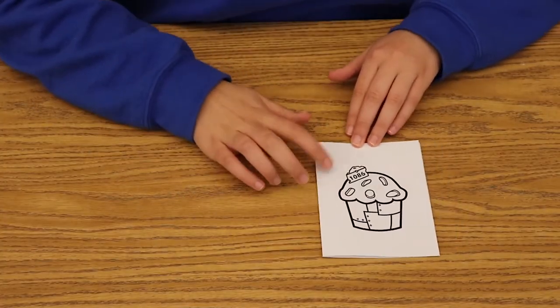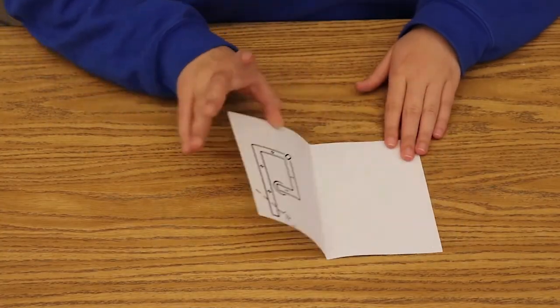First, fold the card in half so that the design is on the front and the circuit is on the inside.